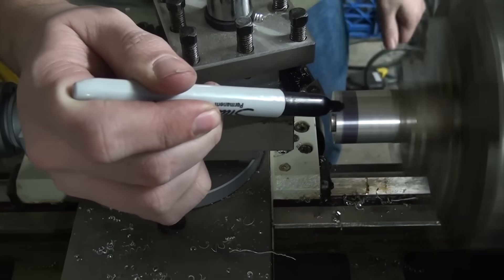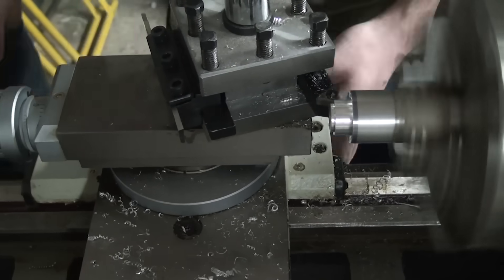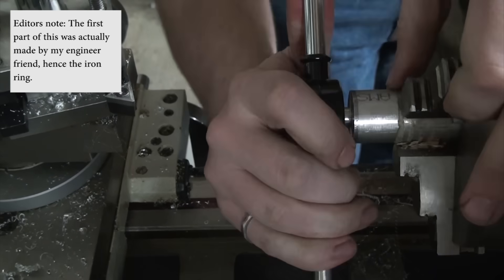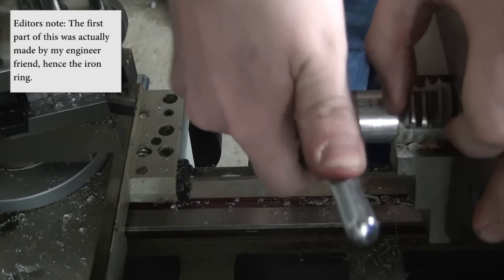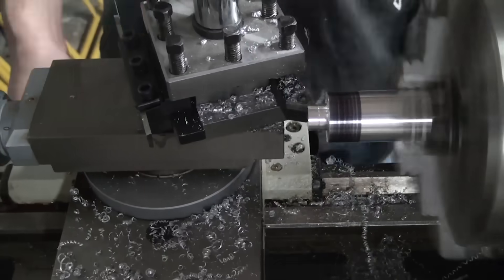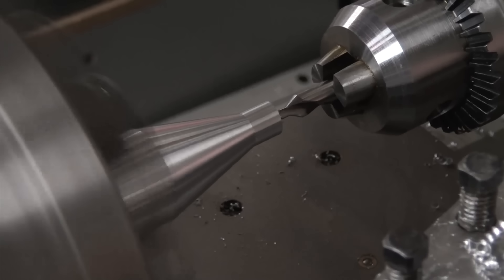So I went about making the insert, starting with the threaded end first, as the part would be awkward to grip once we started cutting the taper. We just used an M10 die to cut the threads, since we didn't want to mess with the gearing in the lathe to try and cut them. Then the part was flipped around, remounted, and the rest of the shape was turned. First the basic profile, and then the 15 degree taper.